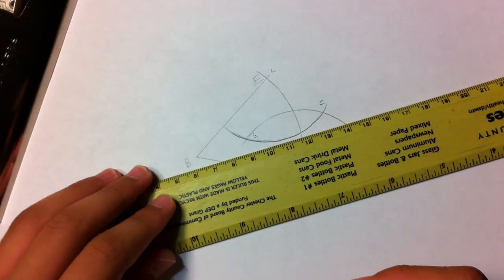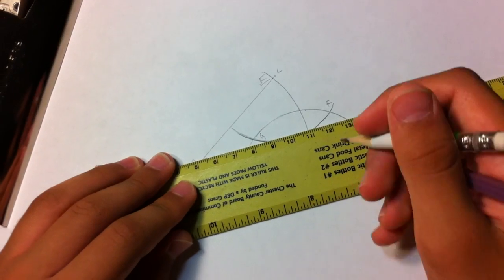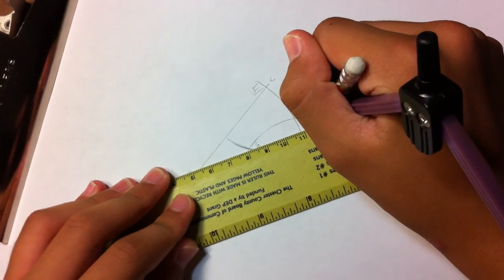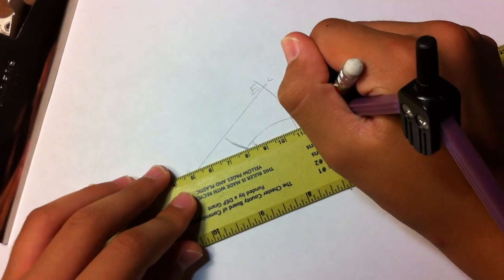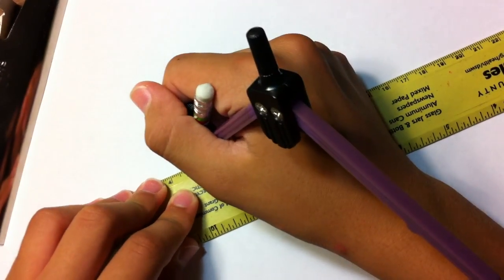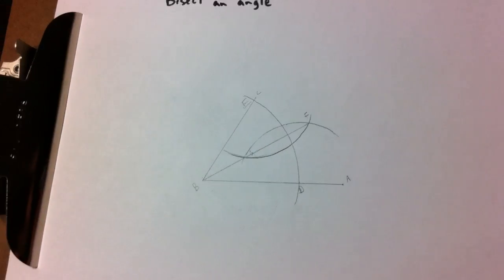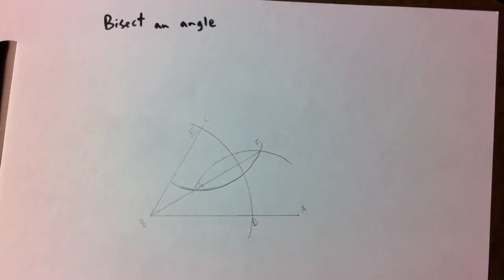Now you draw a line BGF, and that should be your angle bisector. I don't think I even have a protractor here to measure the angle that you bisected. You're just eyeballing it. Looks right, but of course for the sake of the protractor...